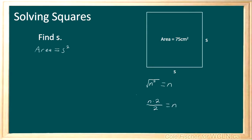So now knowing this, we can use radicals to solve for S. If you take the square root of both sides of this equation — remember, everything you do to one side of the equation you have to do to the other — we get the square root of the area is equal to the square root of S squared. And we know that the square root of S squared is just S.